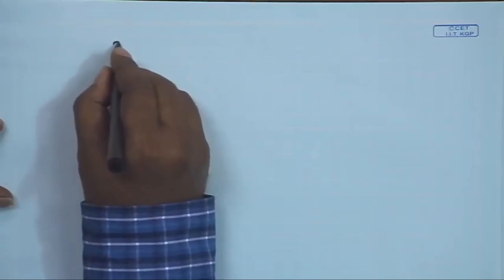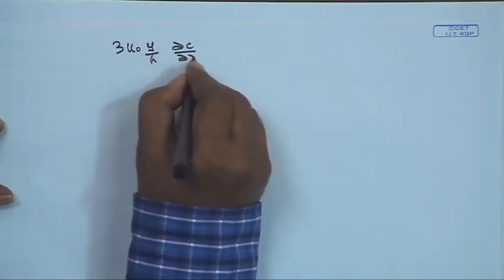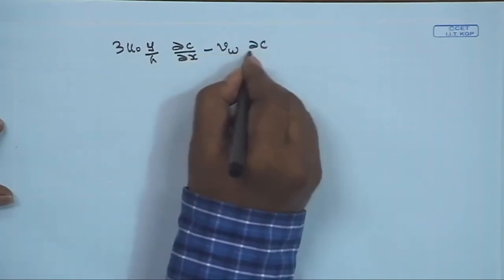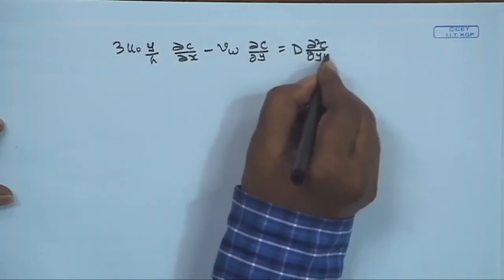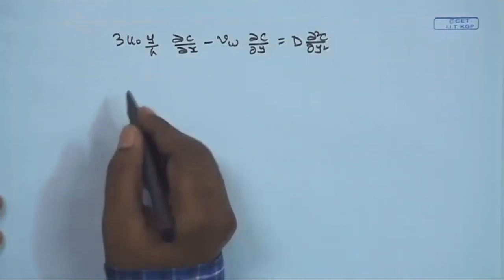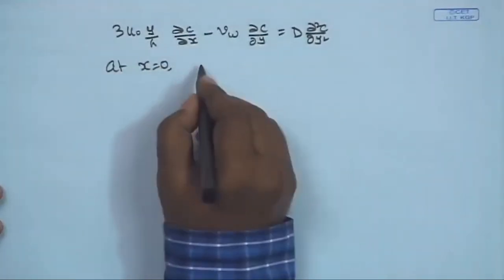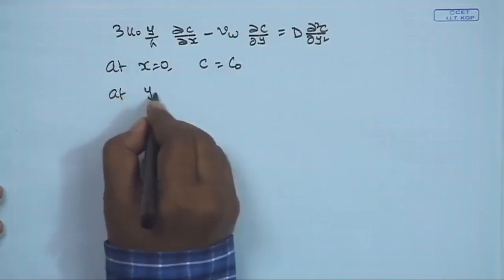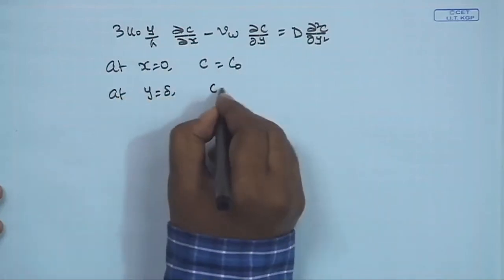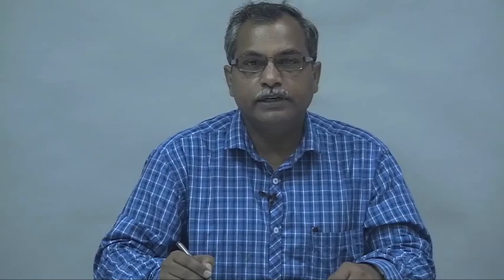The governing equation was: 3u₀(y/h)(∂c/∂x) − vw(∂c/∂y) = D(∂²c/∂y²). We will write down the boundary conditions: at x = 0, c = bulk concentration; at y = δ, c = c₀ (the bulk concentration), where δ is the edge of the mass transfer boundary layer.